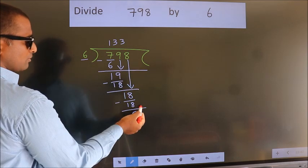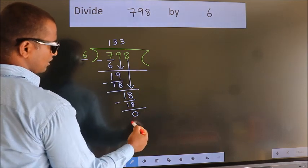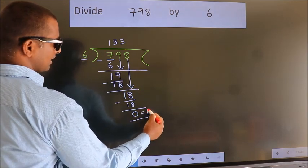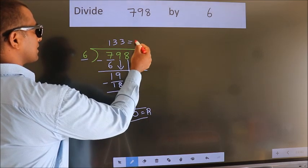No more numbers to bring it down. So we stop here. This is our remainder. This is our quotient.